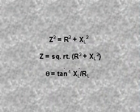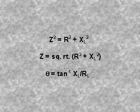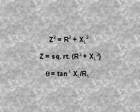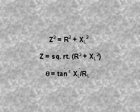Solving for Z squared, we get R squared plus X sub L squared. Z is therefore equal to the square root of R squared plus X sub L squared. Theta is equal to the inverse tangent of X sub L divided by R.